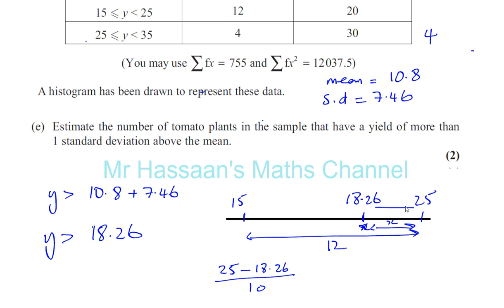divided by 10, the class width. It's the reverse of what we normally do in linear interpolation - normally we're trying to find something up here, now we're finding the number down here. That number is proportional, so x divided by 12 will be the same as this divided by 10.